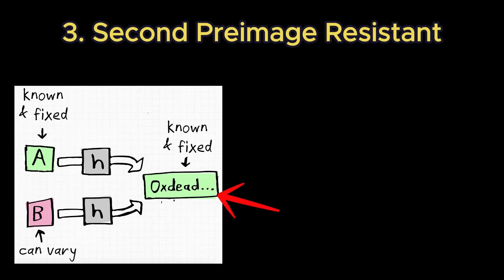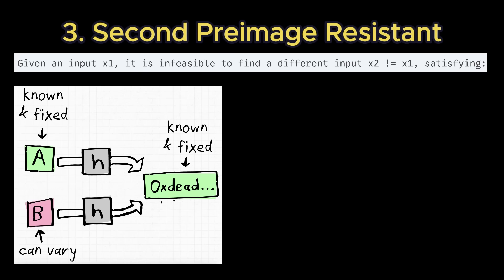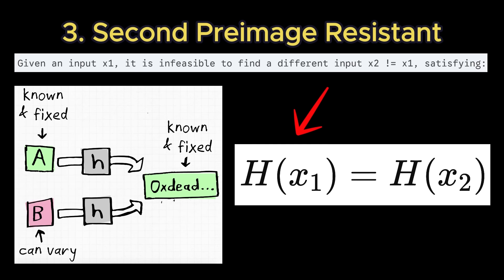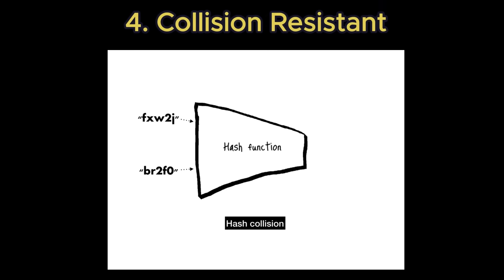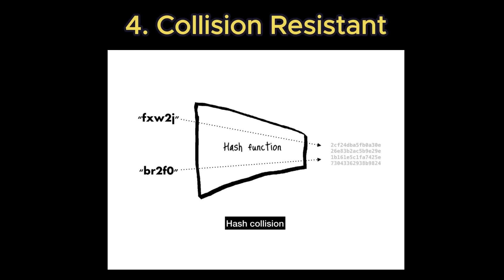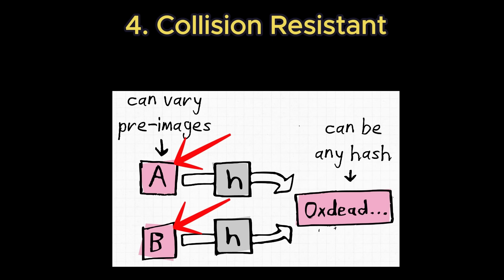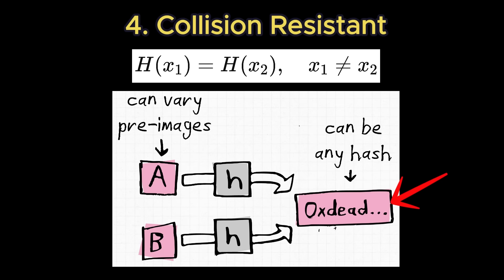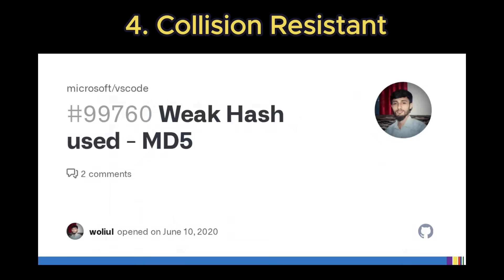It formalizes the property that given an input x1, it is infeasible to find a different input x2 not equal to x1 satisfying the same hash output. And fourth, it is collision resistant, so the likelihood of two distinct inputs producing the same hash is astronomically low. It is extremely difficult to find any two distinct inputs x1 and x2 satisfying the same hash. Later in this video I'll discuss why MD5 no longer satisfies this property.